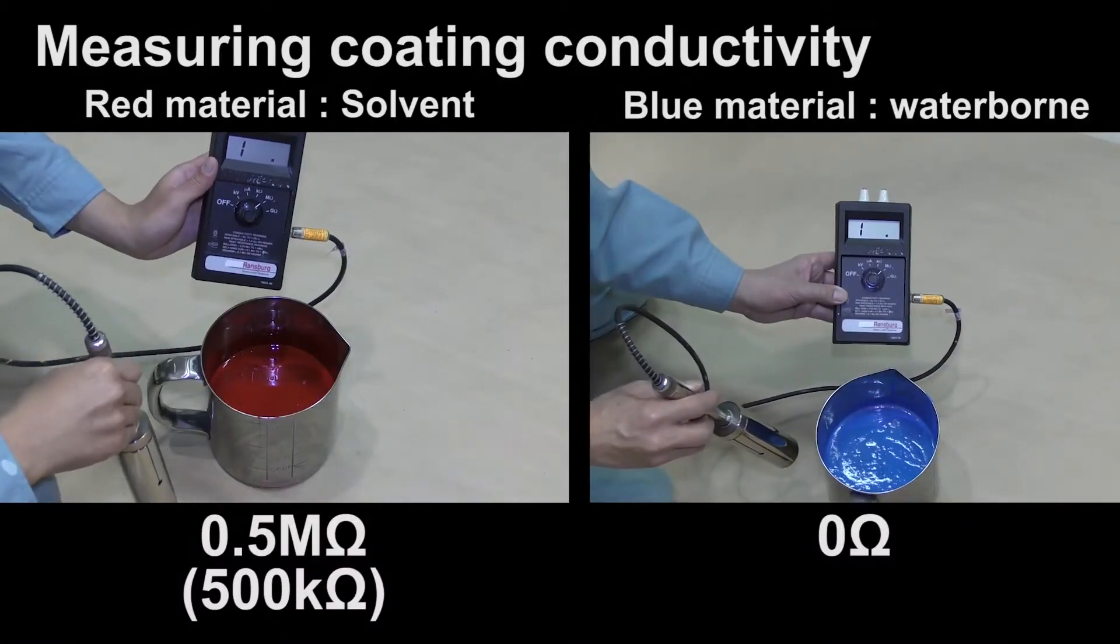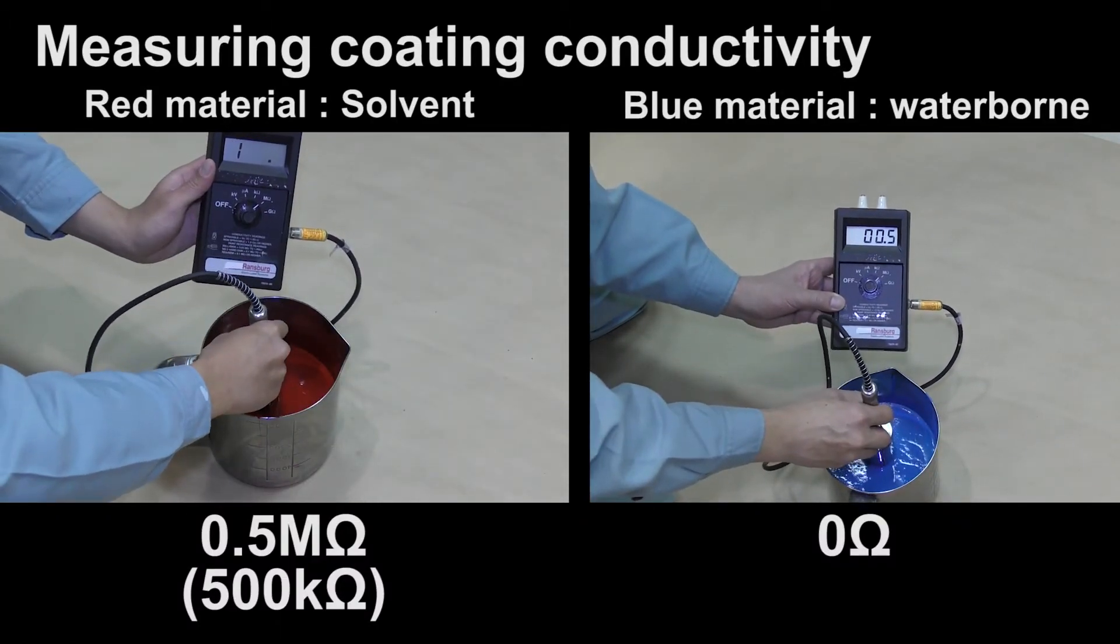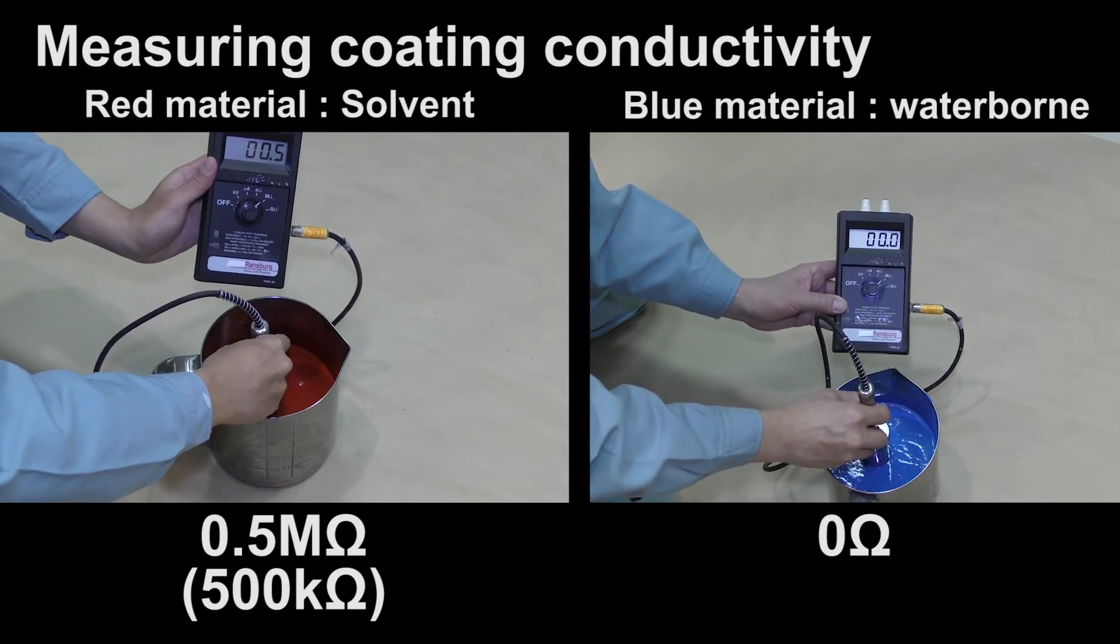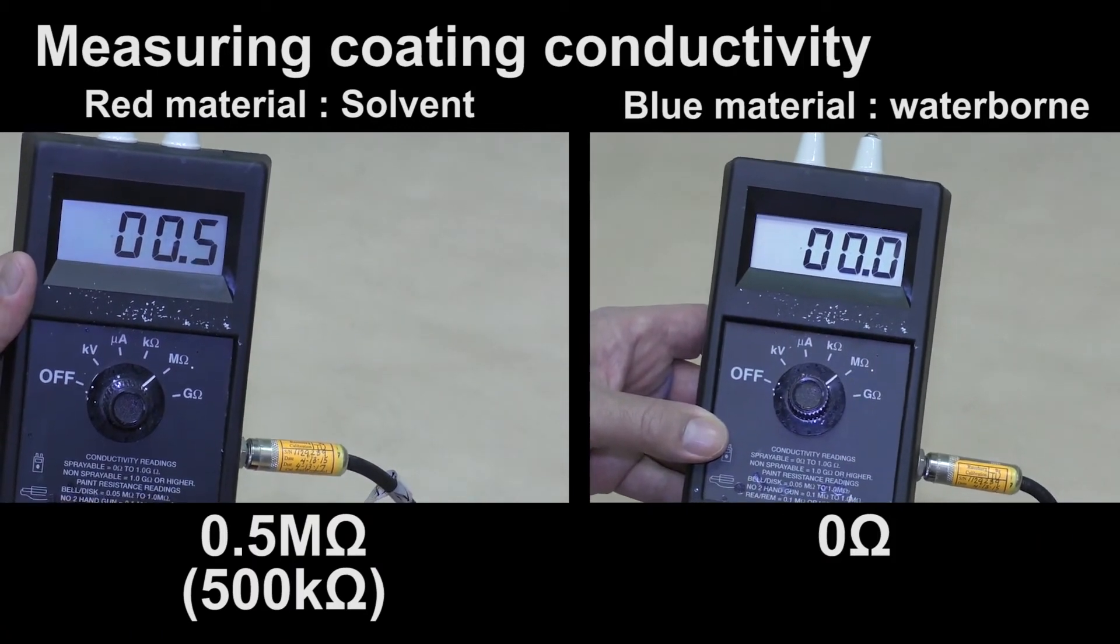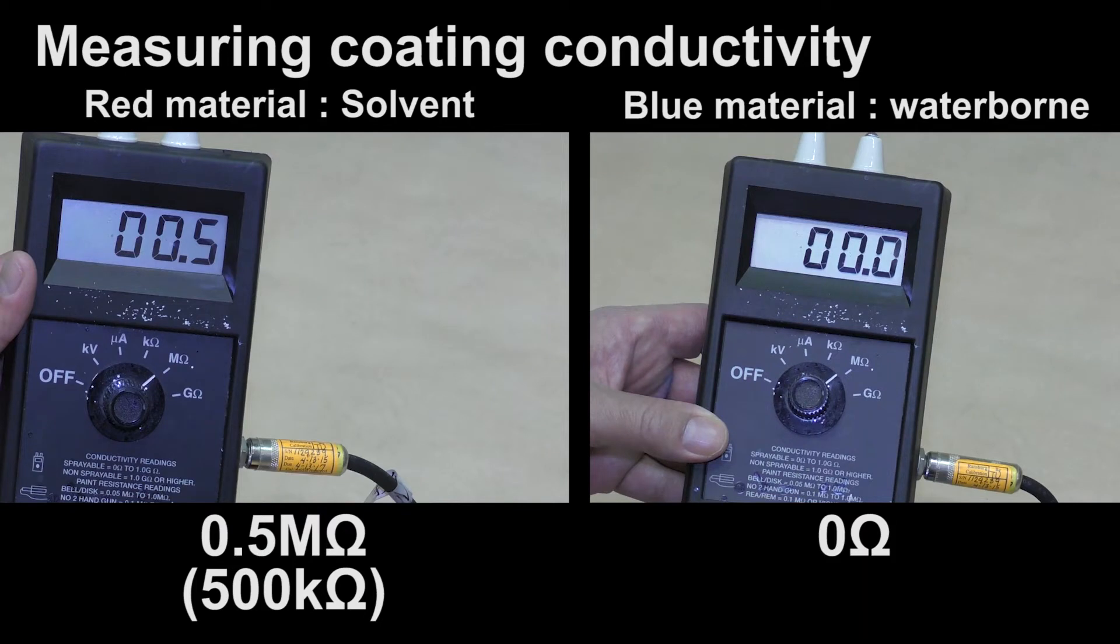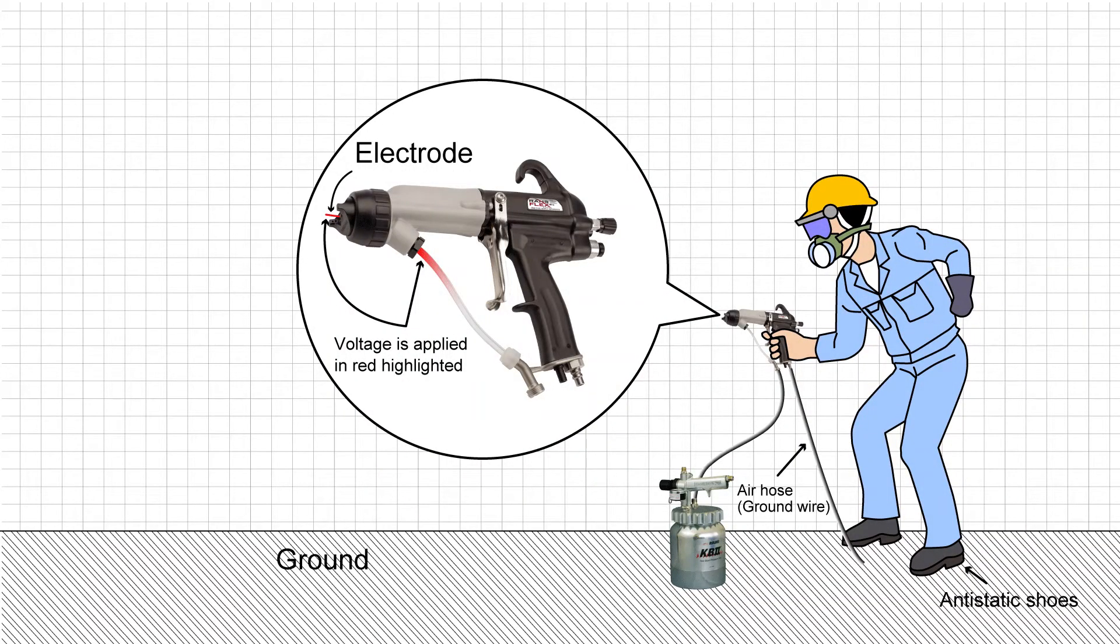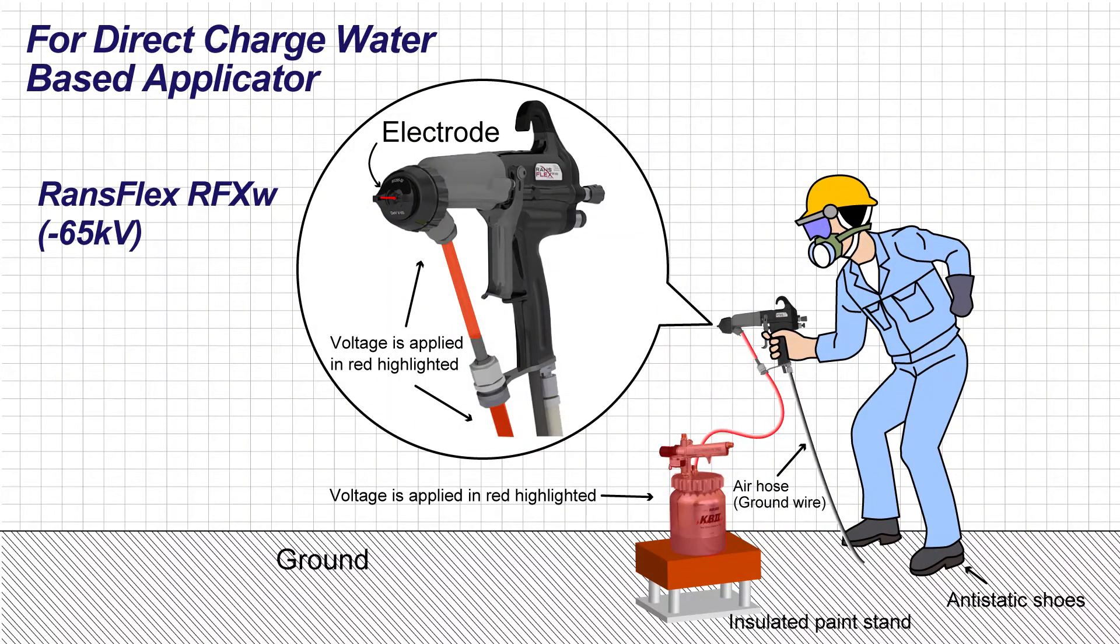One of the differences between solvent and water-borne is electrical resistance. General solvent material has resistance and no current flows compared with water-borne material. On the other hand, water-borne material is conductive and electricity flows to ground. A standard electrostatic gun takes charge to material from an electrode which contacts material. If you use water-borne with an electrostatic gun, the current flows into earth through water-borne supply, and the electrostatic gun wouldn't work properly. Furthermore, if paint supply is insulated, RansFlex for solvent wouldn't work because the current flows from grounded air hose or operator.